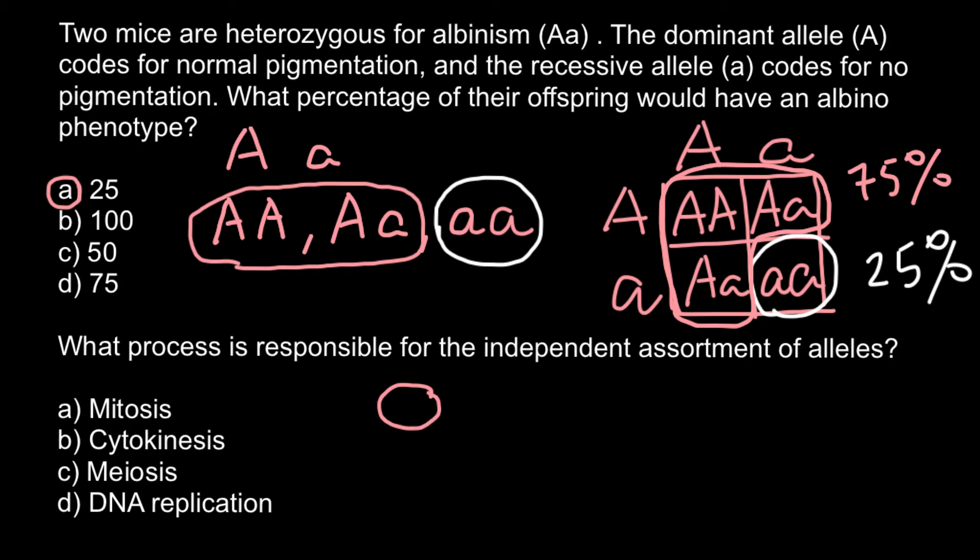In mitosis, we start with a diploid mother cell and end with two diploid daughter cells. This is a brief description of mitosis.